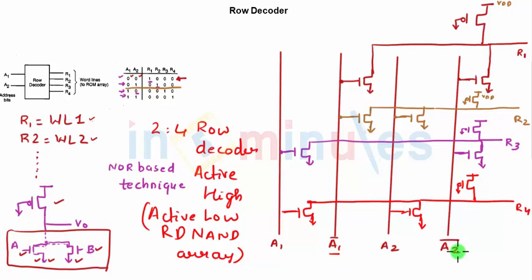Now A1 bar and A2 bar are easily obtained by putting an inverter at A1, which gives me A1 bar, and putting an inverter at A2 gives me A2 bar. So this becomes my entire circuit.